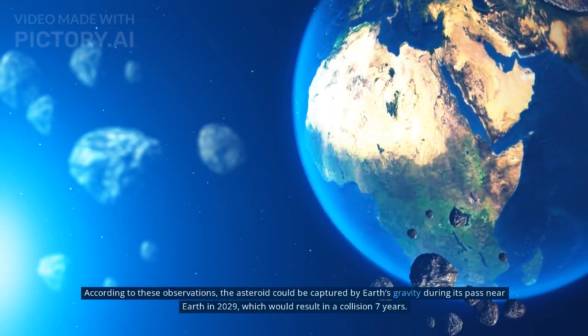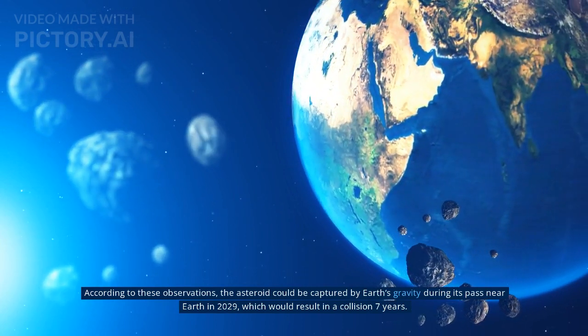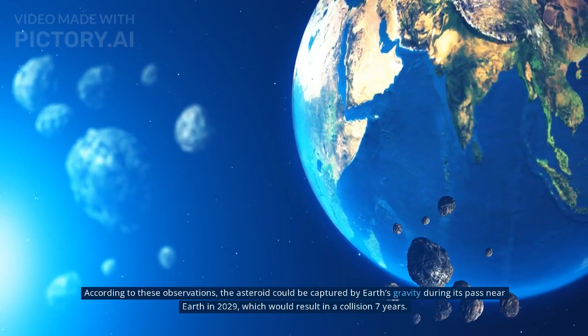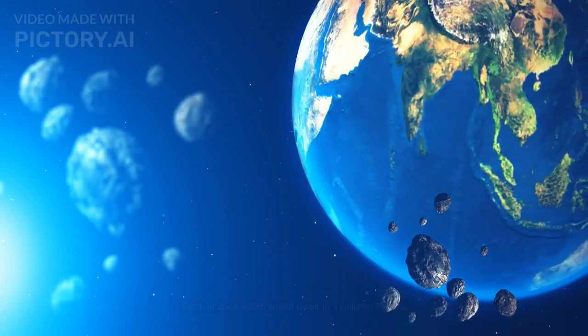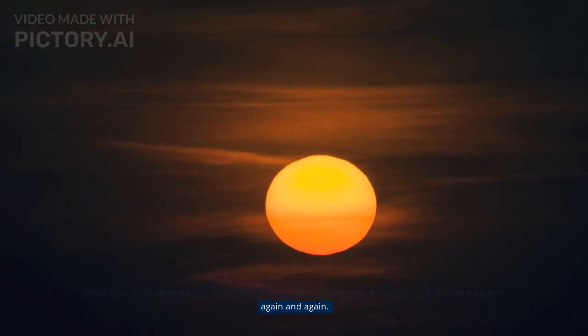According to these observations, the asteroid could be captured by Earth's gravity during its pass near Earth in 2029, which would result in a collision seven years later. After that news came out, astronomers started to take a closer look at Apophis and ran the numbers again and again.